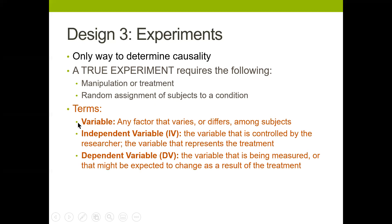To understand this content, you need to be familiar with the terms independent variable (IV) and dependent variable (DV). The independent variable is the variable controlled by the researcher — it represents the treatment. It's independent because it doesn't depend on anything except random assignment.